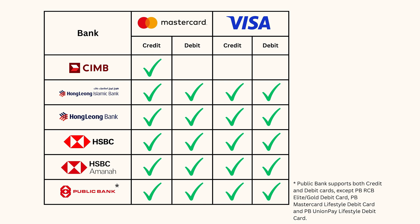As for supported cards, all Visa and Mastercard issued by HSBC, HSBC Amanah, Hong Leong Bank, and Hong Leong Islamic Bank are supported. Public Bank supports all cards except the PB RCB Elite or Gold debit card, PB Mastercard Lifestyle debit cards, and PB UnionPay Lifestyle debit card. CIMB only supports credit cards on the Mastercard network. One notable feature is that Google Wallet can automatically import supported payment cards saved in your Google account, so you can then choose to activate the card for Google Pay without needing to trial and error or call your bank.